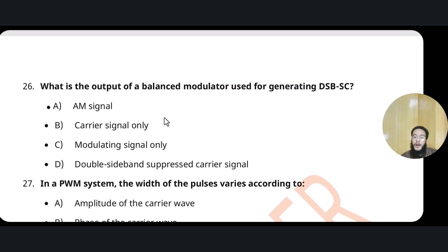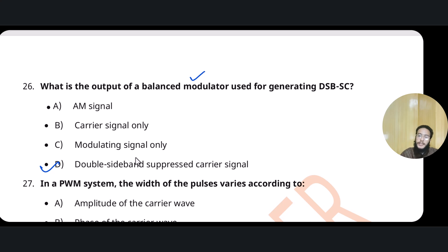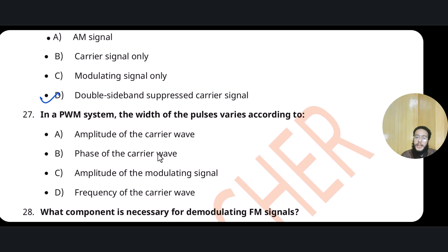What is the output of a balanced modulator? Its function is to pass the sidebands and suppress the carrier, producing a double sideband suppressed carrier (DSB-SC) signal. Similarly, single sideband suppressed carrier (SSB-SC) passes only one band while suppressing the carrier. So the output is double sideband suppressed carrier.